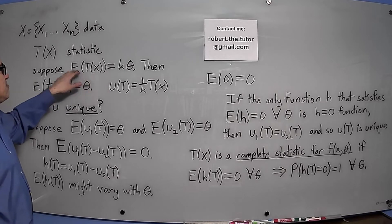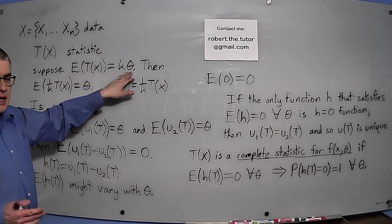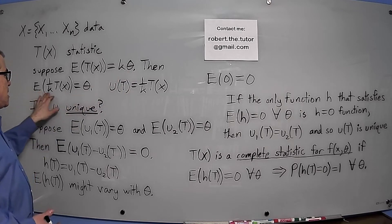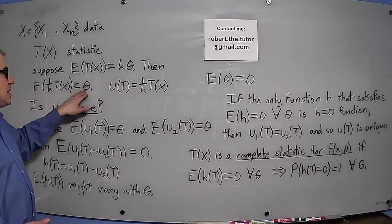Suppose, for example, E(T(X)) is k times the actual θ. Then if you divide it by k, you would have the expected value of this function is θ.